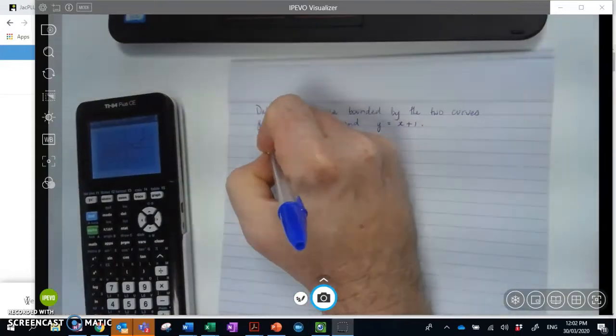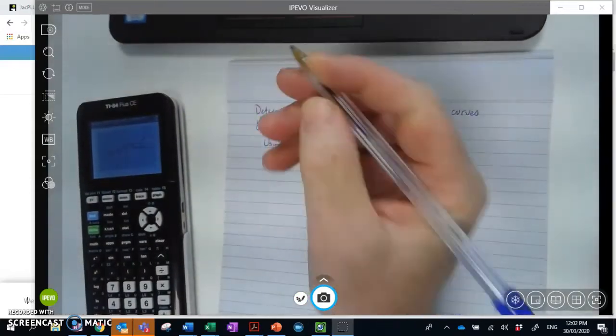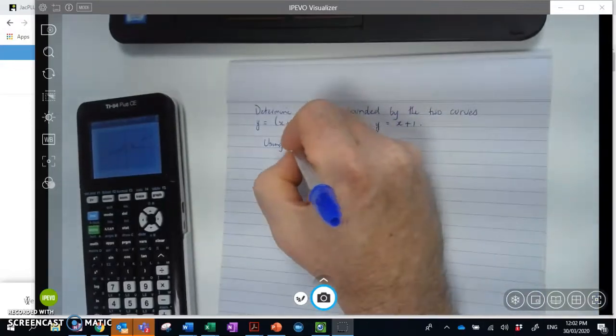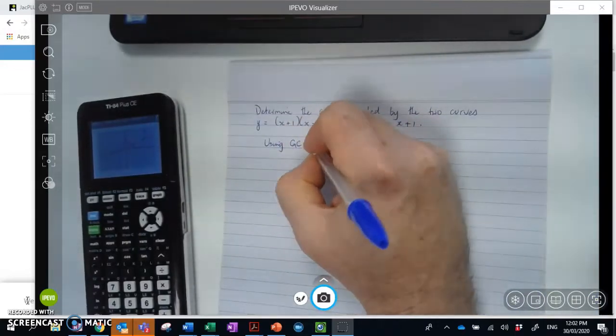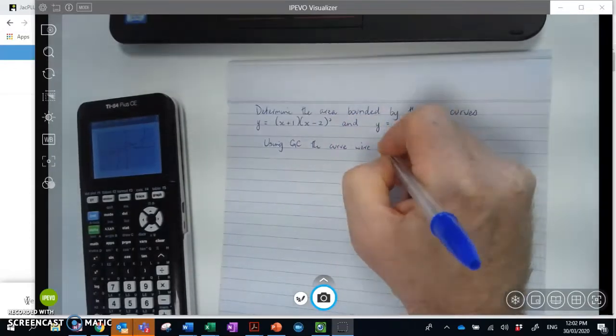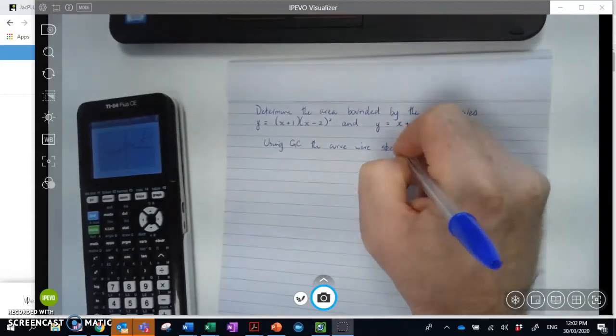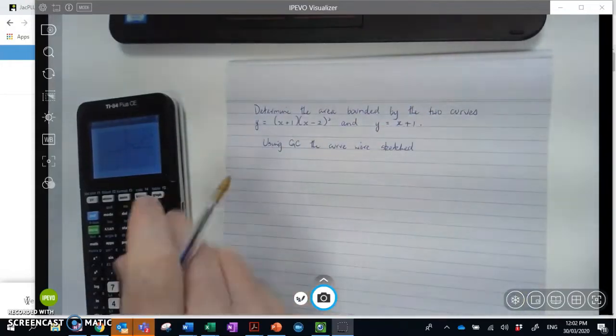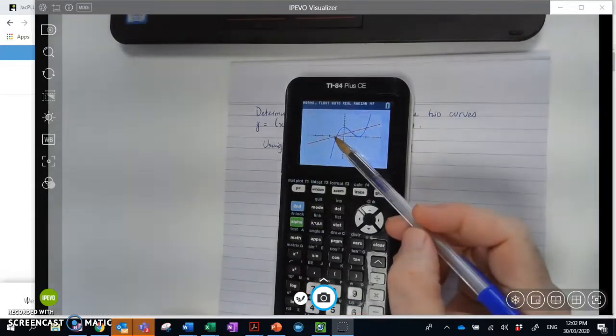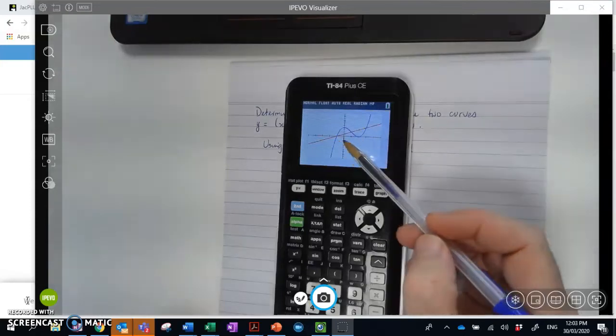And it might be an idea because we want to convey this information and justify it in a potential exam. We can just say using GC, the curves were sketched. And important to this is not just sketching the curves, but finding the point of intersection. So for instance, I want to know where initially this red line meets the blue line firstly, then in the middle and then finally at the end.